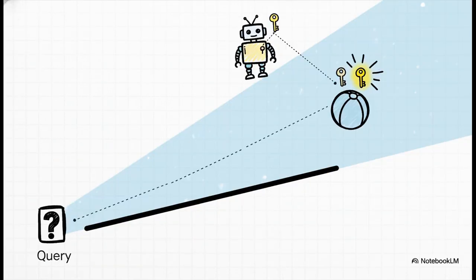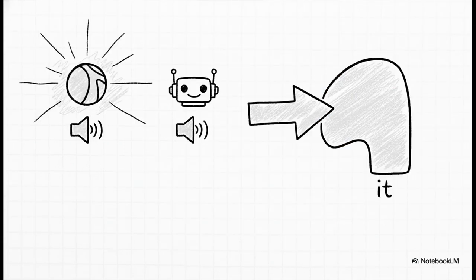Okay, next up, for every single word in that sentence, robot, ball, all of them, the model creates a key. Think of a key like a label or a signpost that says what the word's role is. Then, the model takes its query for the word it and compares it to the key for every other word, and it calculates a score. In our example, the key for ball would get a really, really high score. And finally, each word also has a value, which is its actual meaning, its substance.